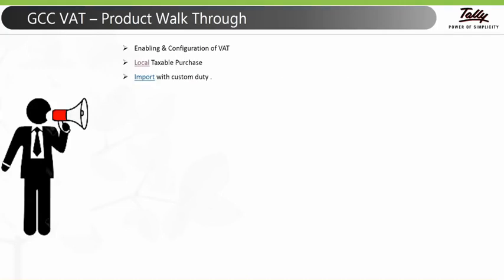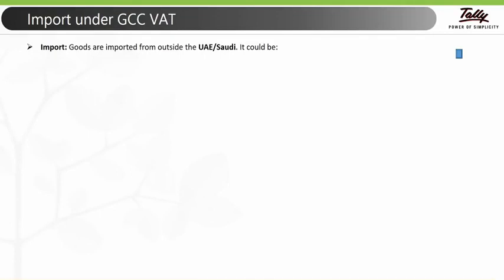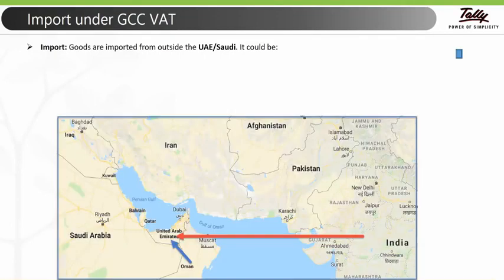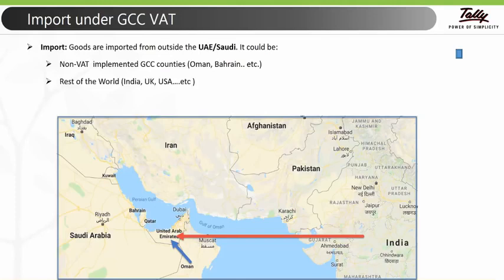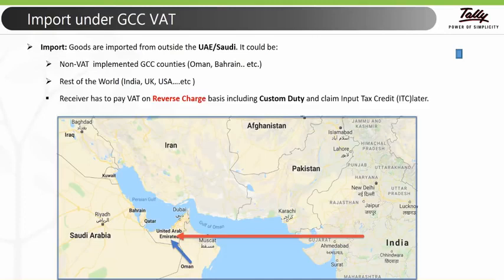The next transaction is import with custom duty. If goods are imported from outside UAE or Saudi Arabia — whether from non-VAT-implemented GCC countries like Oman or Bahrain, or from the rest of the world like India, UK, or USA — the receiver has to pay VAT on reverse charge. Reverse charge mechanism means the buyer is obliged to pay tax on behalf of the supplier. Reverse charge mechanism is applicable only when importing goods or services from outside the Gulf and non-VAT-implemented countries of the Gulf.